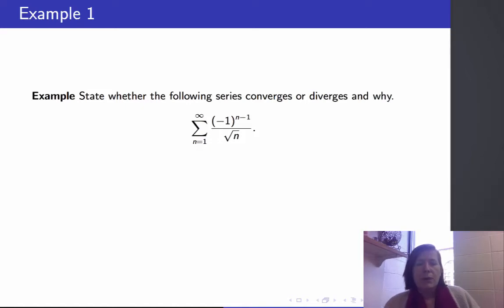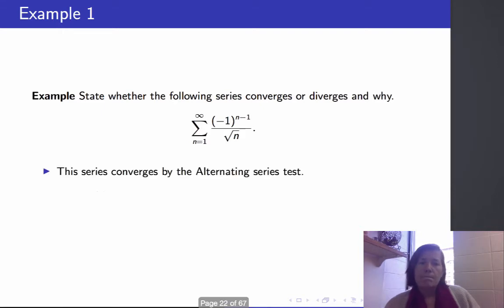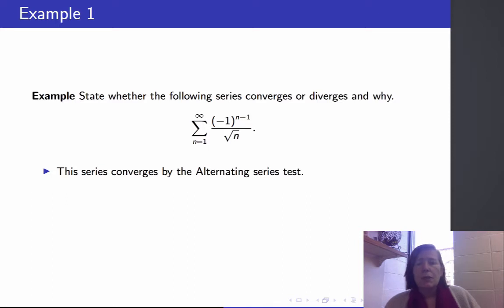Let's try to run through a bunch of series. Suppose we want to decide whether the following series converges or diverges. We're going to try the alternating series test because it is an alternating series, and it looks like it's going to be pretty easy to calculate the limit as n goes to infinity of the terms and show that they're decreasing.